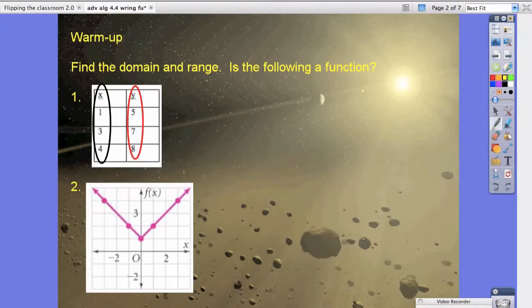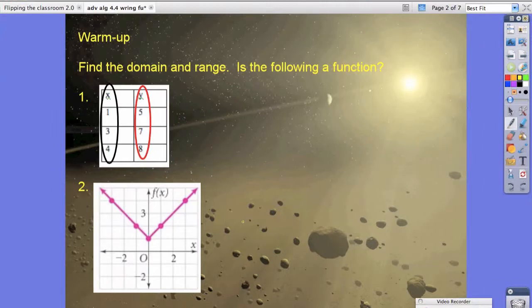But in the graph that we see for problem number 2, the domain is all the values in our x. They're all the values that we can go to the left and to the right. So if we track this graph, keeping in mind we only want to know left and right.